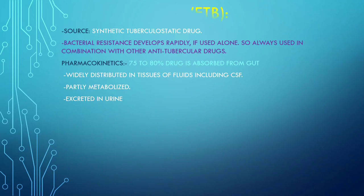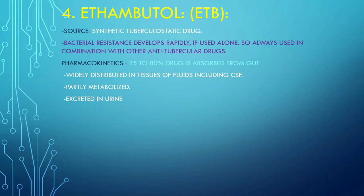Next is Ethambutol. The source of this particular drug is that it is a synthetic tuberculostatic drug. Bacterial resistance develops rapidly if used alone, so it is always used in combination with other antitubercular drugs. Pharmacokinetics: 75 to 80% of the drug is absorbed from the gut, it is widely distributed in tissue fluids, excreted in urine, and partly metabolized.